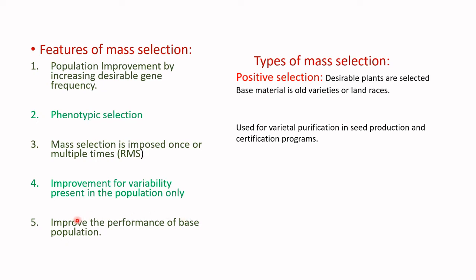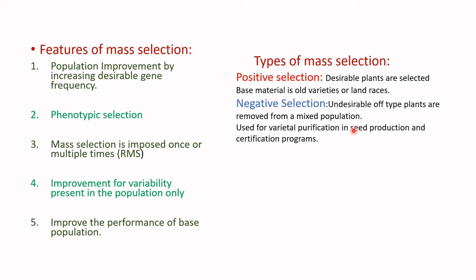Mass selection can only improve the base population; to create new variation you need mutation or hybridization from a different parent. Mass selection has two types: positive selection — selection of desirable plants — and negative selection — removal or rogueing of off-type plants. From a base population we select desirable lines; in negative selection from among desirable lines any off-type plants are rogueed out. This negative selection is usually practiced in seed production plots to increase genetic purity.